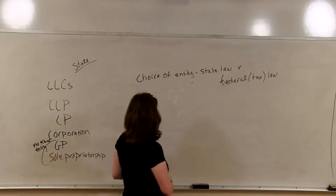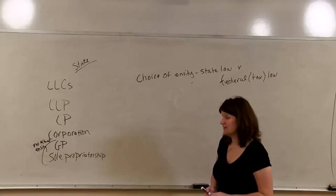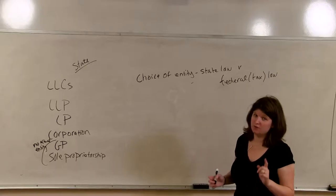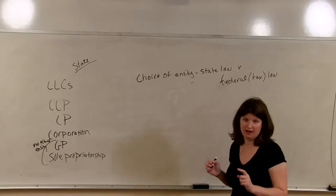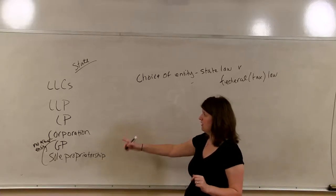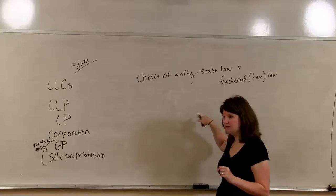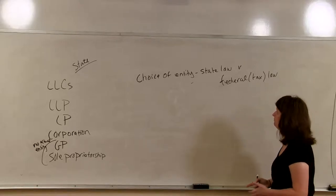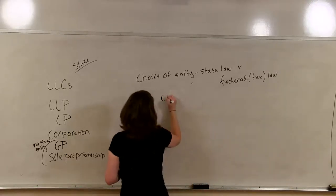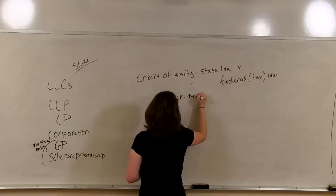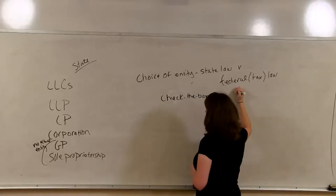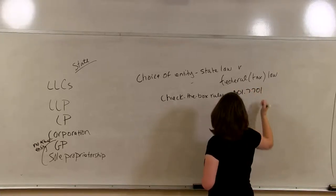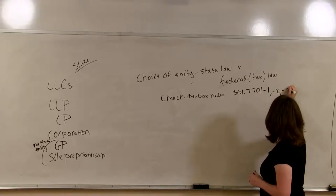Let's talk about choice of entity for federal law — when we say federal law, we're talking about tax law. People get very confused on this — attorneys and accountants alike — because just because you have an entity created under state law does not mean it is a certain type of entity under federal law. We have what are called the check-the-box rules, found in code section 301.7701-1, -2, and -3.